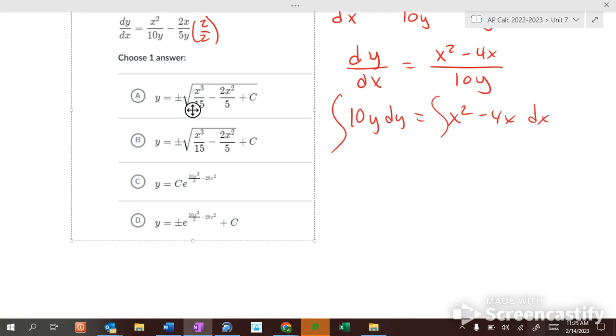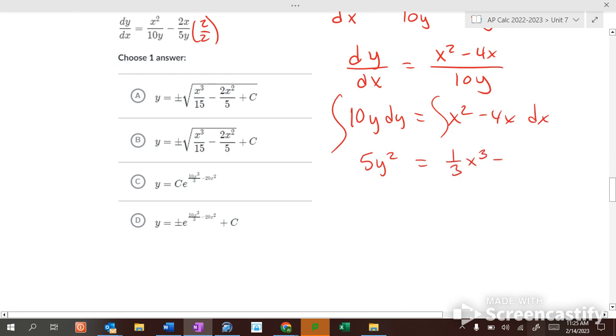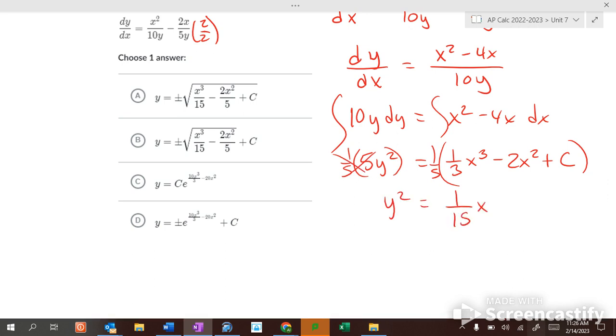What does this become? 5y squared equals 1 3rd x cubed minus 2x squared plus c. Got to remember the plus c. Then what do we do to both sides to get y alone? Divide by 5, which is the same as multiplying by 1 5th. So y squared equals 1 5th x cubed minus 2 5ths x squared plus c. Because what's 1 5th of a constant? It's still a constant. So you don't put c over 5.